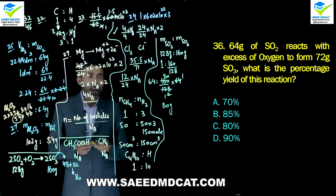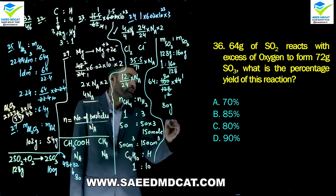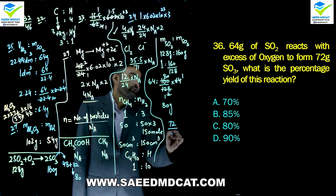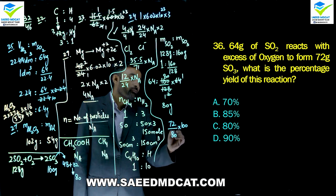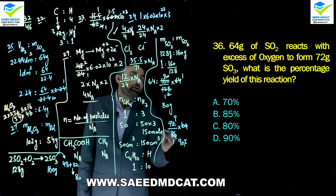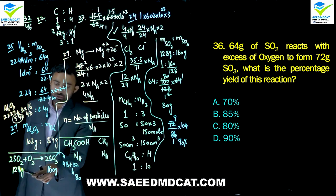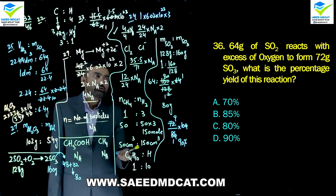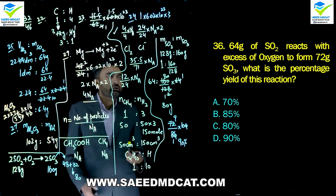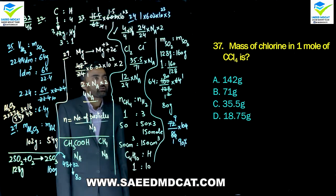Theoretical yield = 80 g, actual yield = 72 g. Percent yield = (72/80) × 100 = 90%. Delta option (90%) is correct.